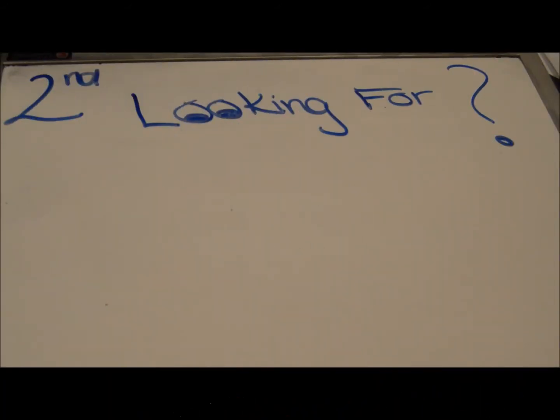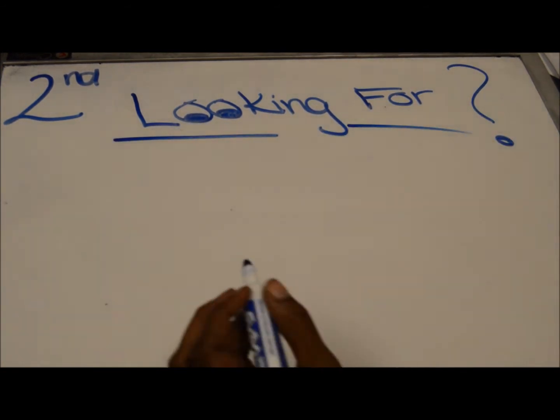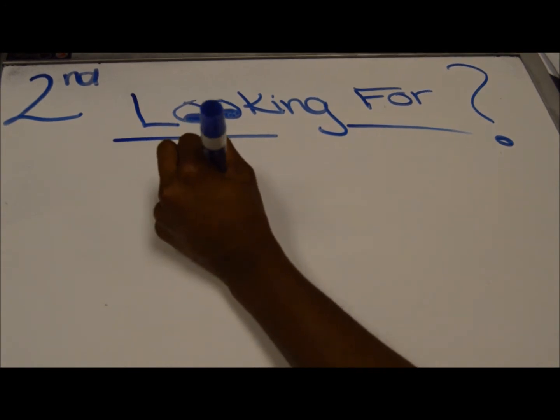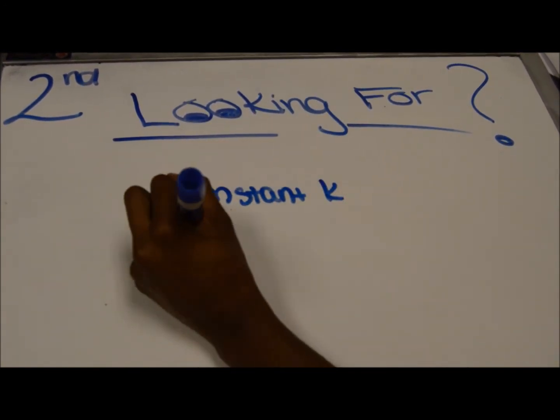After you do the first step of drawing the picture, the second step is to identify what quantity you are looking for within the problem. In this problem, we are looking for constant k, k being the rate of the growth of the tumor.